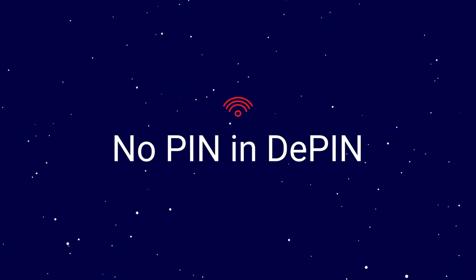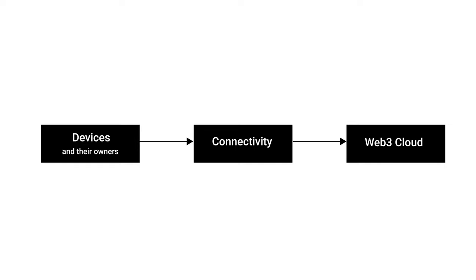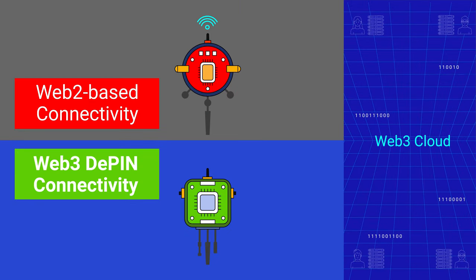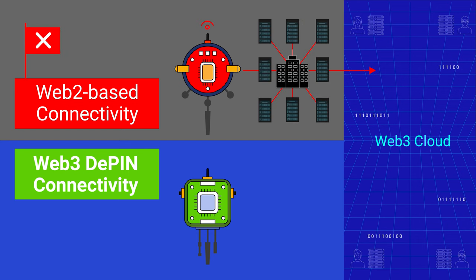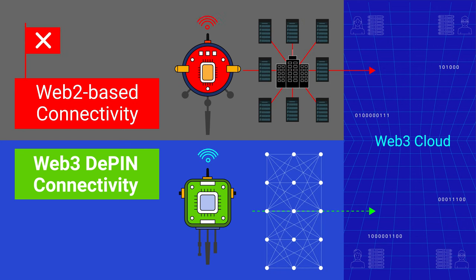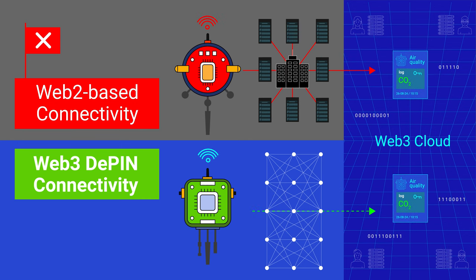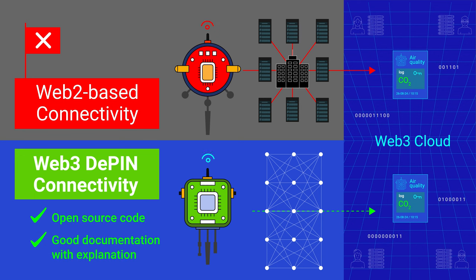No PIN in DePIN. Devices need to connect to the decentralized cloud, and for this purpose there are intermediate components called connectivity. If these components are implemented using old Web2 standards, it's a red flag — for example, if it's impossible to deploy connectivity on your own, or if it requires complex network reworking. Even worse is when the component exists in a single instance and only developers have access to it. Proper connectivity in DePIN should have open-source code and good documentation explaining its operation, so that any network participant can deploy it independently.